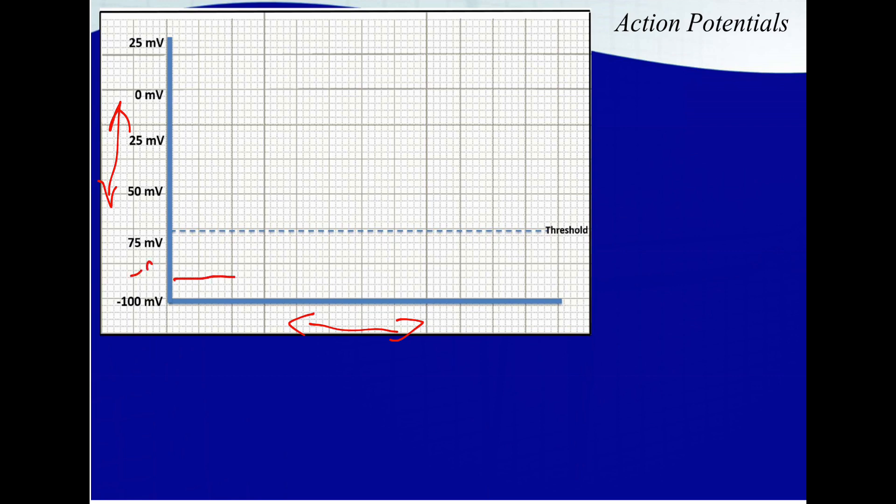We're going to start with a voltage of about negative 90, and this is called phase four. I know it's weird you're starting with phase four, but I start here because this is where our baseline is, at about negative 90 millivolts. It's at negative 90 because the cell membrane is more permeable to potassium than any other ion, and the equilibrium potential of potassium is negative 90 millivolts.